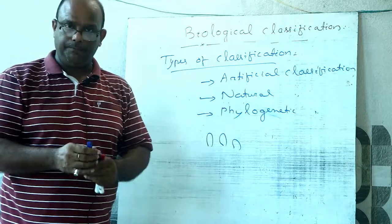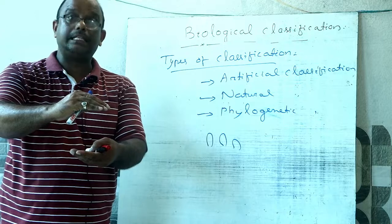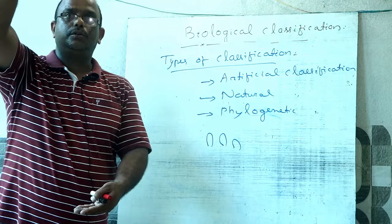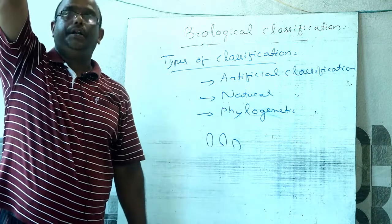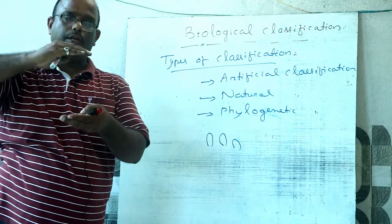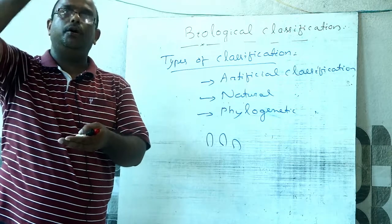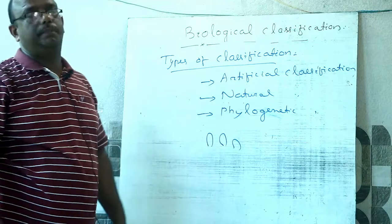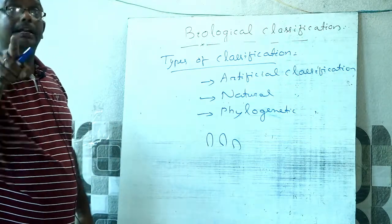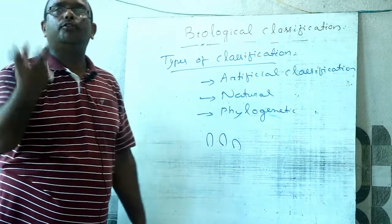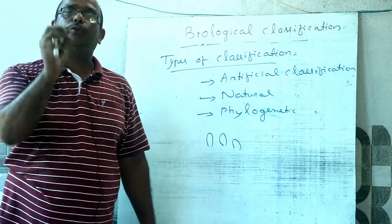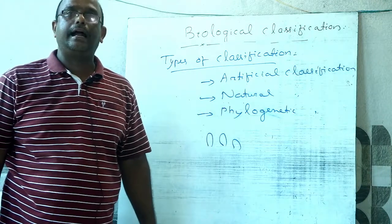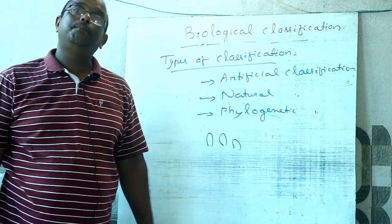Theophrastus classified plants into 4 classes: herb, shrub, undershrub, and tree, based on plant habit. This is an example of artificial classification. Linnaeus classified plants into 24 classes — Monandria, Diandria, Triandria, and so on up to Cryptogamia — based on the number of stamens, which are sexual characters.